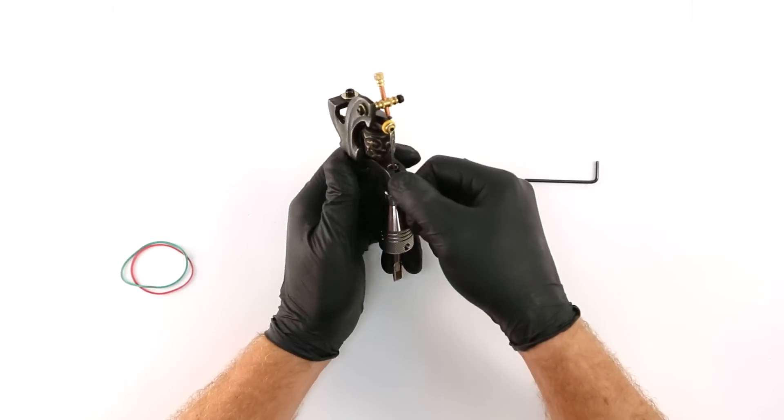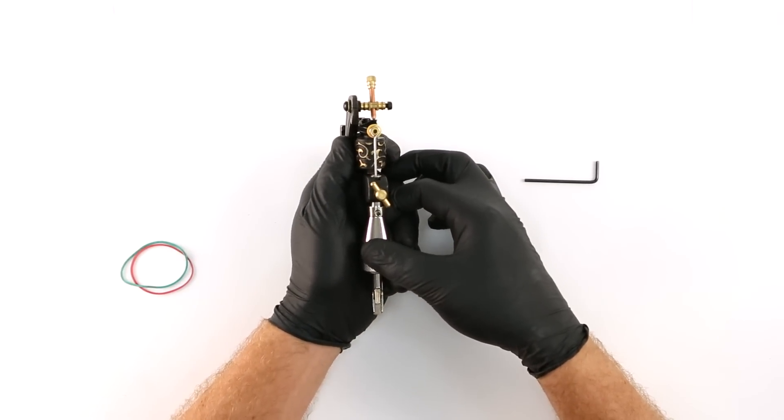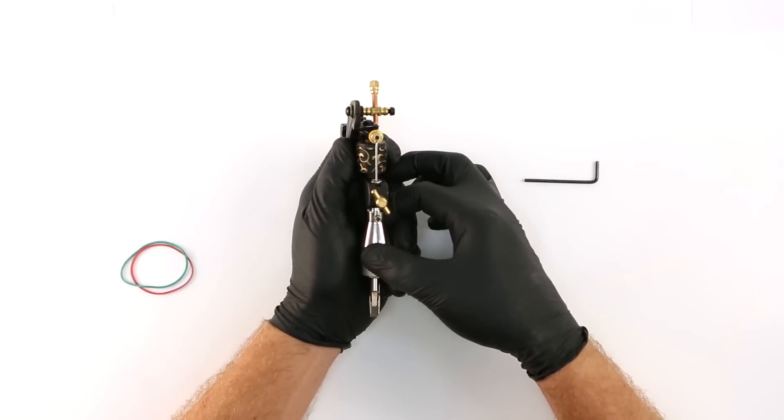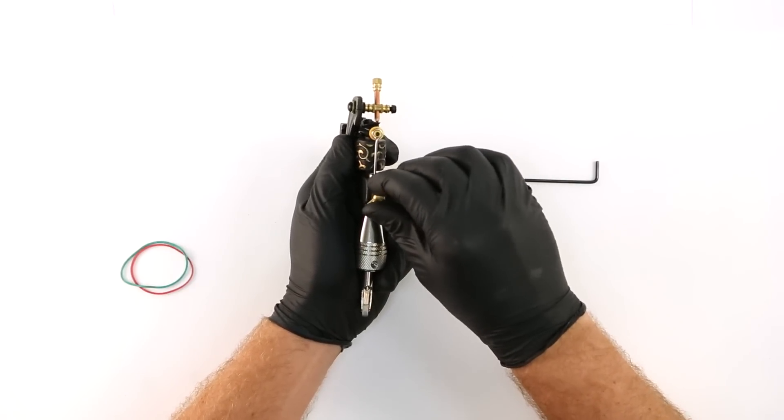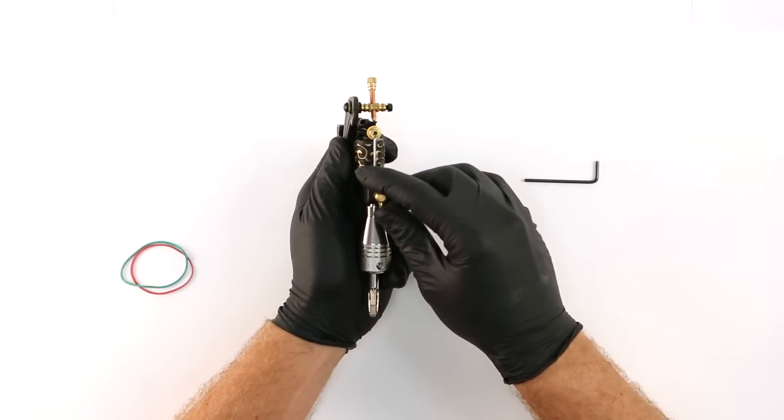You can adjust the tube vertically to correctly set the amount of needle riding depth, which is simply how much needle remains out the end of the tip when the machine is not in use. Loosen the vise and then raise or lower the entire tube to get the depth to your desired measurement.